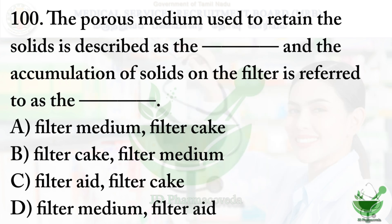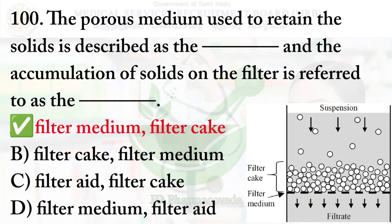Question number 100: the porous medium used to retain solids is described as dash, and the accumulation of solids on the filter is referred to as dash. Options: option A — filter medium, filter cake; option B — filter cake, filter medium; option C — filter aid, filter cake; option D — filter. The right option is option A: the porous medium used to retain solids is the filter medium, and the accumulation of solids on the filter is called the filter cake.